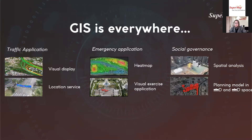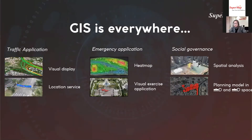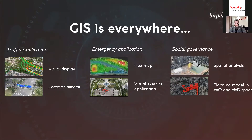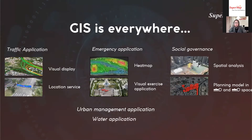The next application is social governance. For the government, urban planning is not a simple thing — it requires various kinds of knowledge collaborated together. With GIS, we can utilize spatial data from various sources, analyze in 2D and also in 3D, and get conclusions applicable to urban planning. Other applications include urban management, water management, business applications, and more — all of which increase the performance and realization of smart city.